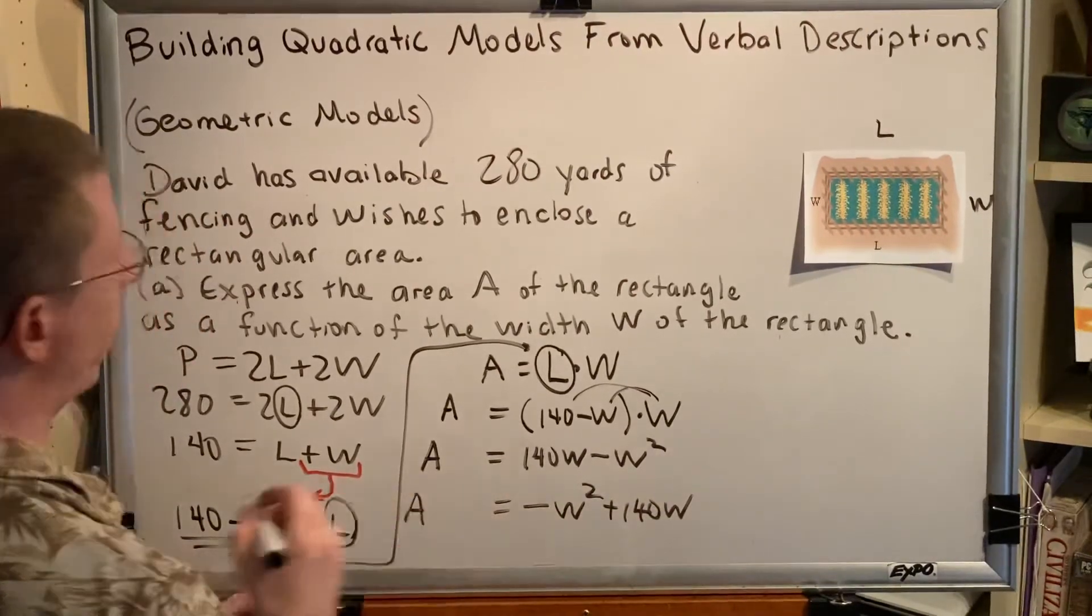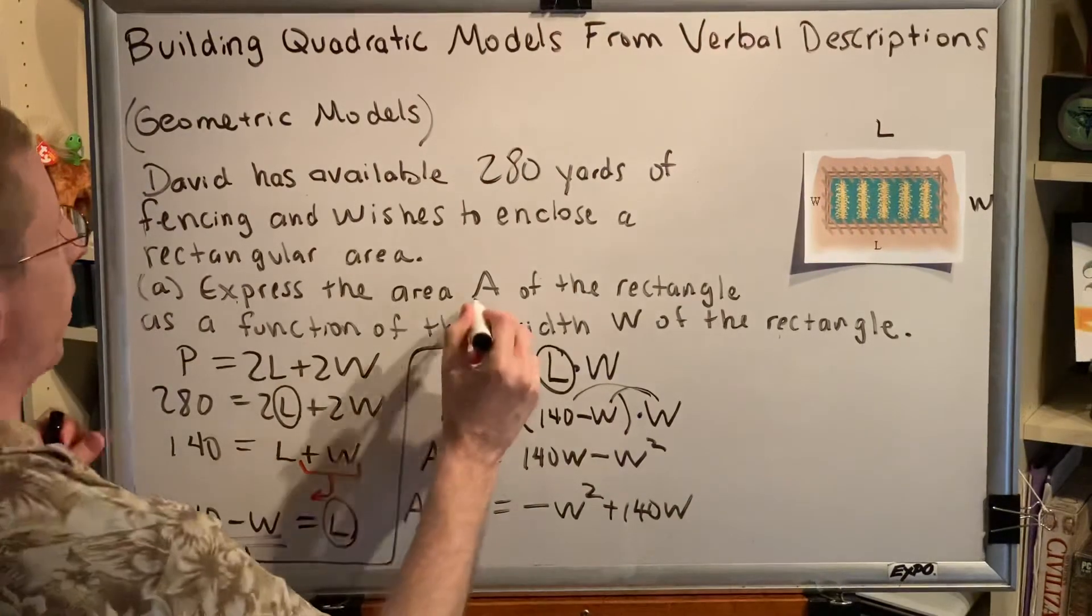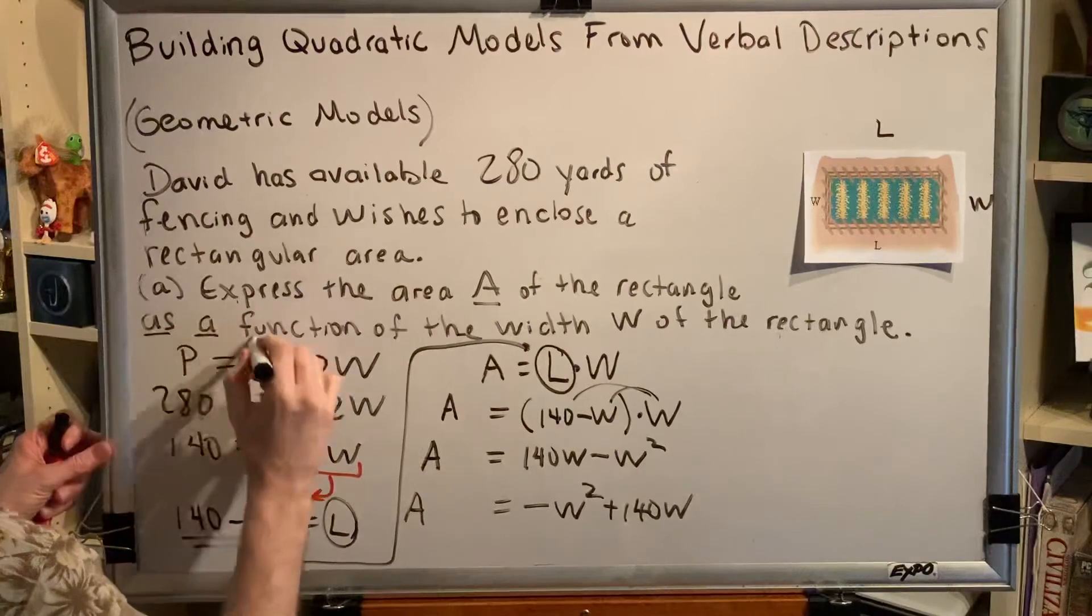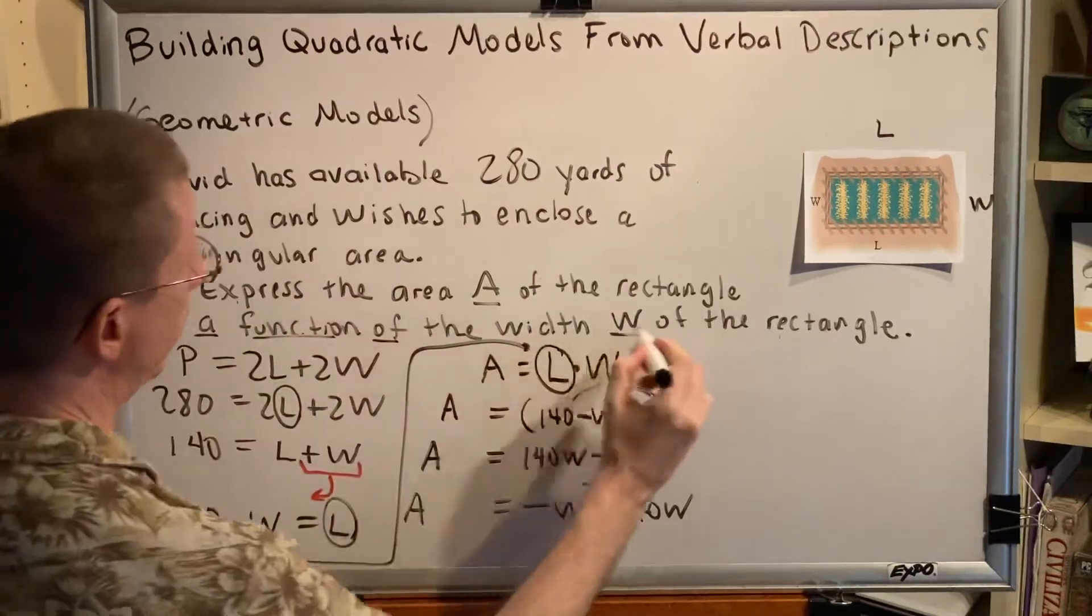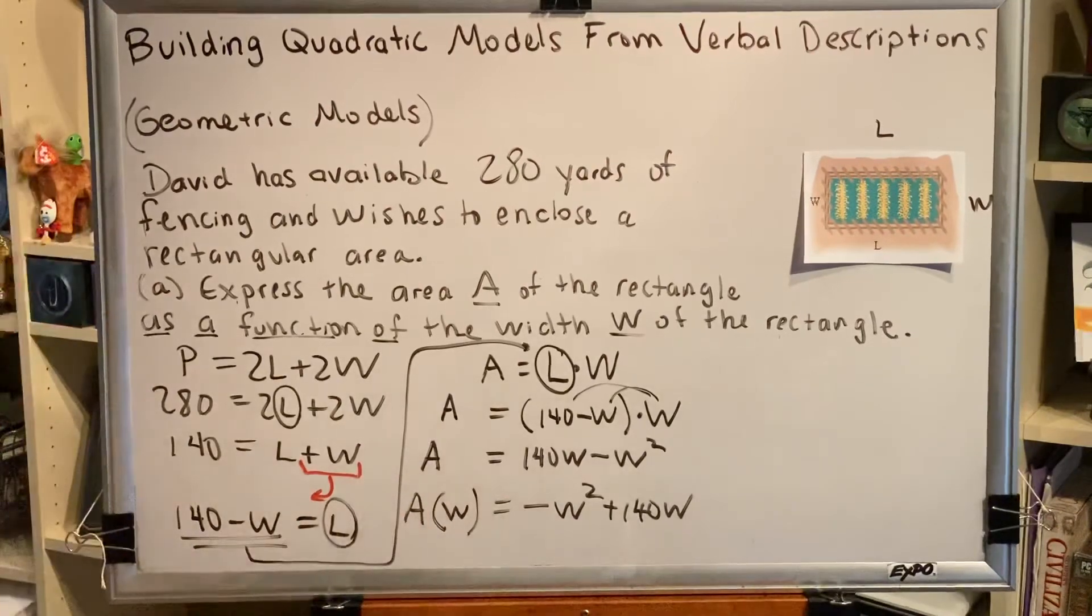Now, before we call this our final answer, we have to pay attention to the wording of the problem. It says to express A as a function of W. So we can't just write A equals. We have to write A of W equals.